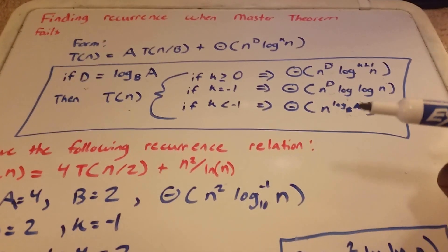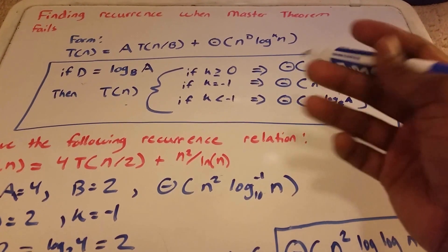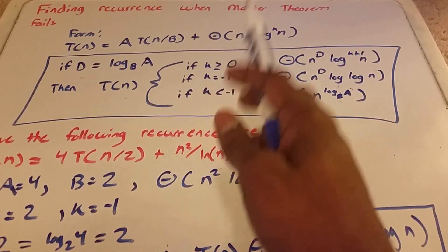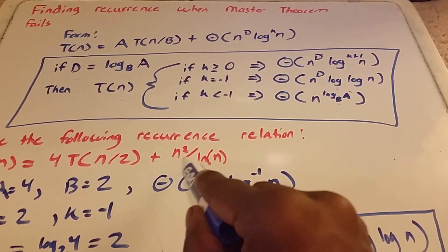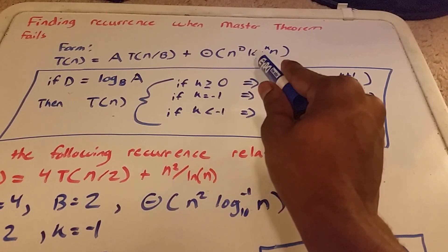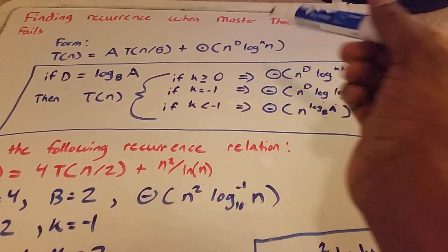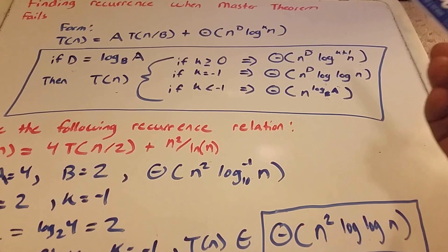to solve master theorem—I'm sorry, to solve recurrence relations that the master theorem cannot solve in the form of Θ(n^D·log^k(n)). So using this makes it a lot easier.